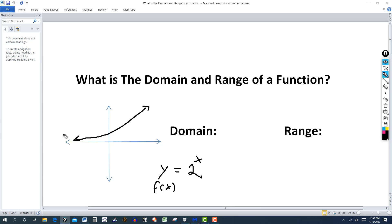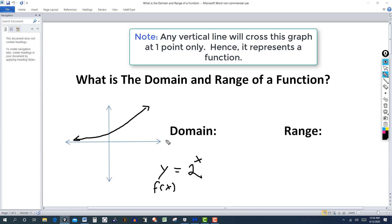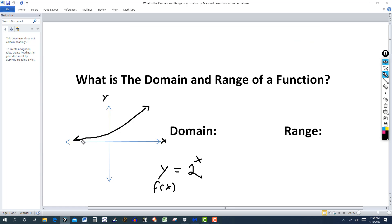But for right now, we're just looking at the domain. So let's suppose this graph approaches the x-axis but doesn't touch it. So in other words, the x-axis is a horizontal asymptote. So the graph goes down like this, keeps going forever, never touches, and then goes up.